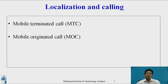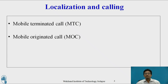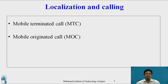Localization and calling comes in two ways: Mobile Terminated Call and Mobile Originated Call. Mobile Terminated Call is a call originated from a landline phone and terminating at your mobile phone, while Mobile Originated Call is a call originated by your mobile phone.